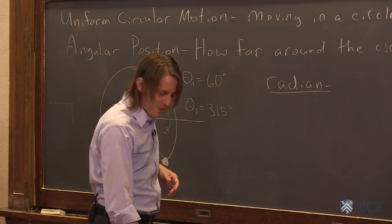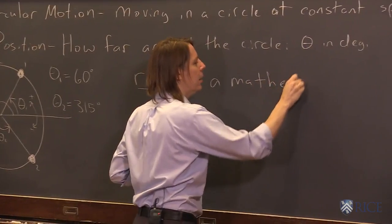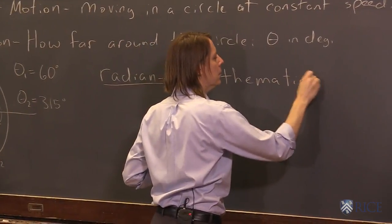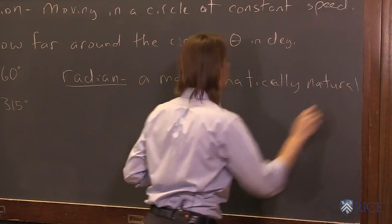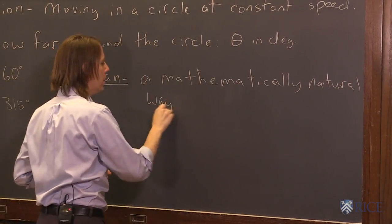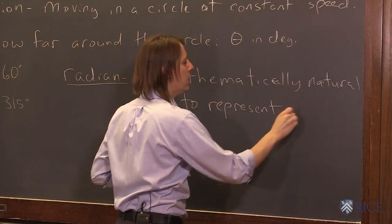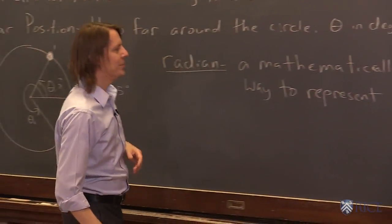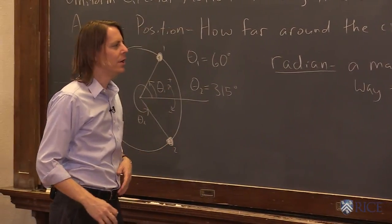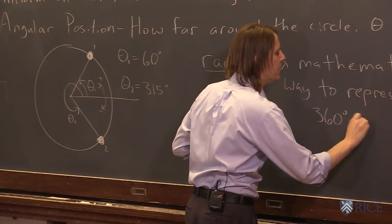Radians, if I had to define them, what I would say is a mathematically natural way to represent an angle. There are much more than that—we'll be doing more with them through the class—but to get started, just think of it as another way to represent an angle where 360 degrees equals 2π radians.